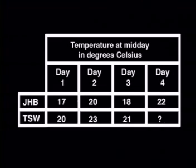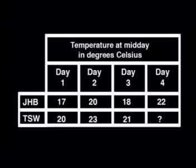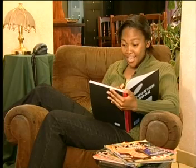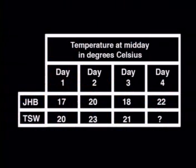Here's one more. Study this table of temperatures. What do you think the temperature will be in Tswane on day four? I can't seem to figure this out. Did you notice that the temperature in Tswane is three degrees warmer than in Johannesburg for days one, two, and three? So it would probably also be three degrees warmer on day four — the answer would be 25 degrees Celsius. But do you agree the answer to this example is not as convincing? Something unexpected could cause the temperature to be much colder or hotter than predicted.